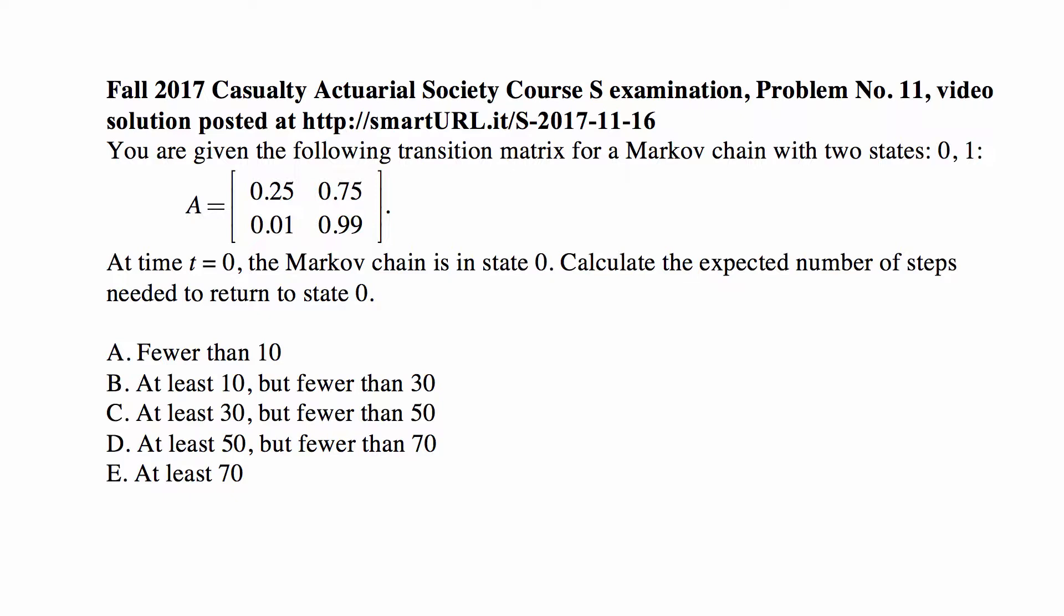The matrix is denoted by A, and it tells you that the probability of transition from state 0 to state 0 is 0.25, from state 0 to state 1 is 0.75, from state 1 to state 0 is 0.01, and from state 1 to state 1 is 0.99. At time t equals 0, the Markov chain is in state 0. Calculate the expected number of steps needed to return to state 0.